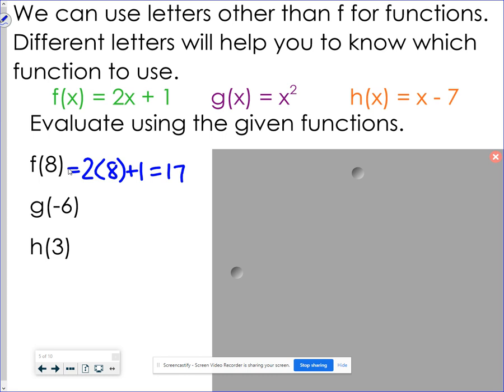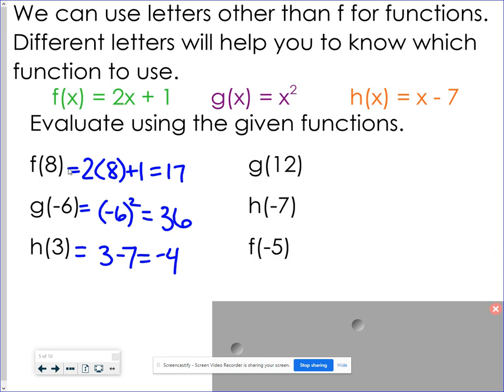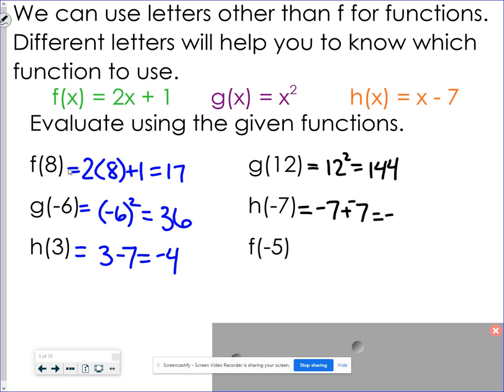Using the g function, I would have g of x is just saying take that x and square it. So negative 6 squared. Now that's not going to be negative because negative times negative. It's going to be positive 36. Using the h function, I was just saying take the input and subtract 7. So this is going to be 3 minus 7 is going to be negative 4. Let's try a couple more here. g of 12 would be 12 squared, which is 144. h of negative 7. Now don't get fooled into thinking that this is 0. This is going to be negative 7 minus 7. It's going to be negative 14. We're going to do our keep change change. And f of negative 5 would be 2 times negative 5, which is negative 10. Negative 10 plus 1 would be negative 9.